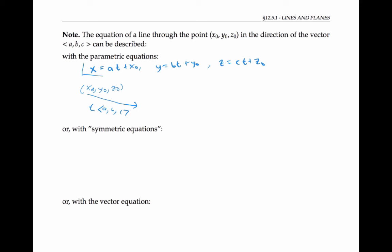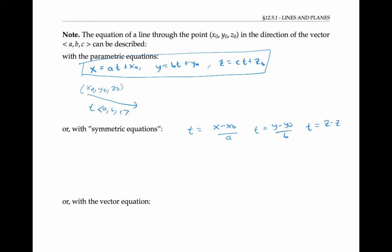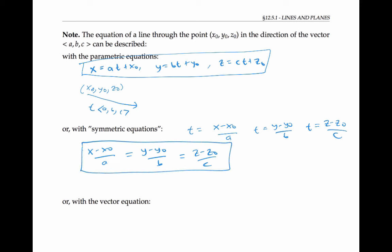Now if we take our parametric equations and solve for t, we get t equals (x minus x-naught) over a, t equals (y minus y-naught) over b, and t equals (z minus z-naught) over c. Setting these expressions for t equal to each other, we get (x minus x-naught)/a equals (y minus y-naught)/b equals (z minus z-naught)/c. The equations in this format are called the symmetric equations for the line.